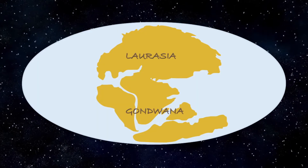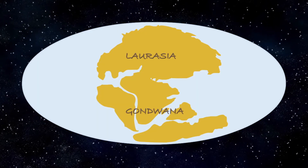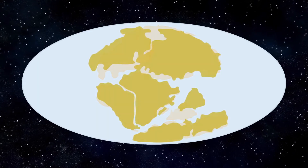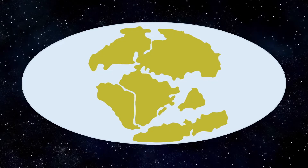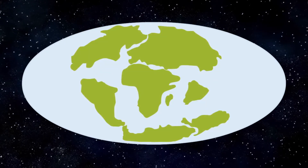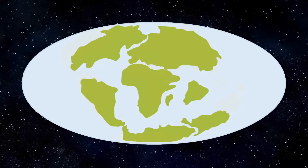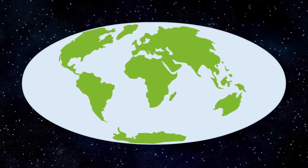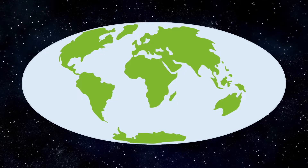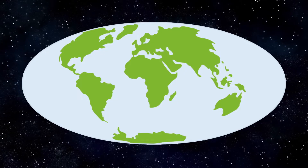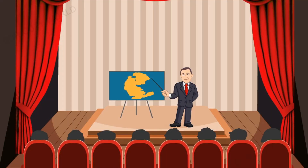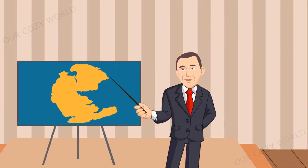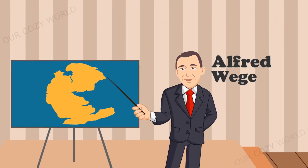Subsequently, Laurasia and Gondwana also continued to break into several smaller land masses, and gradually all of them slowly moved to their current positions. This idea of continental drift was proposed by the German scientist Alfred Wegener in 1912 and was called the theory of continental drift.